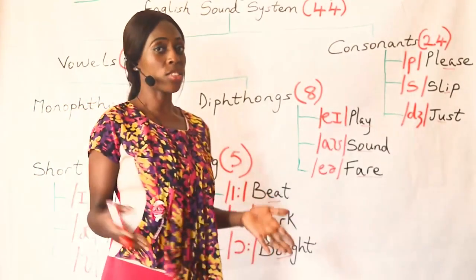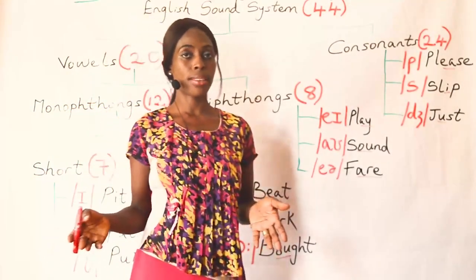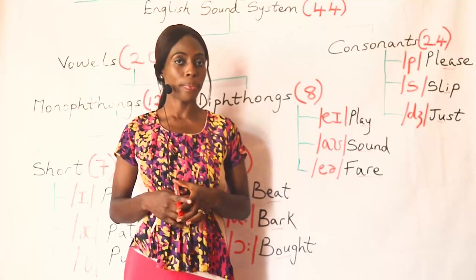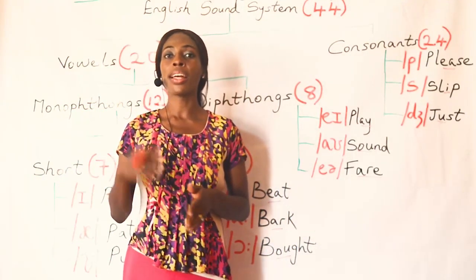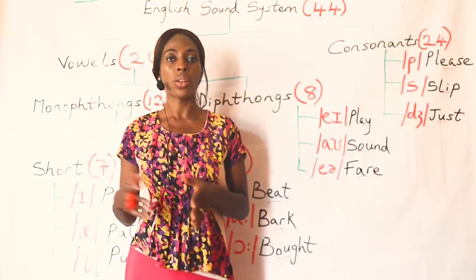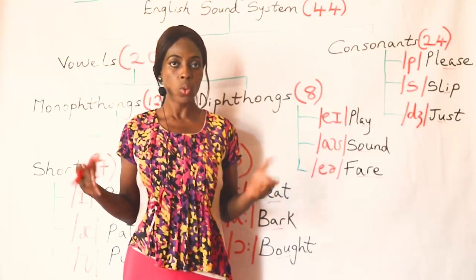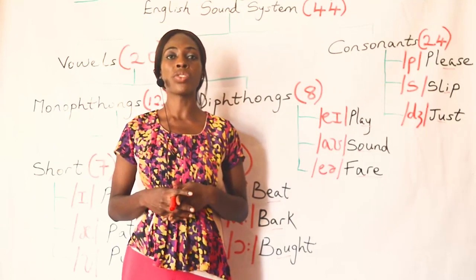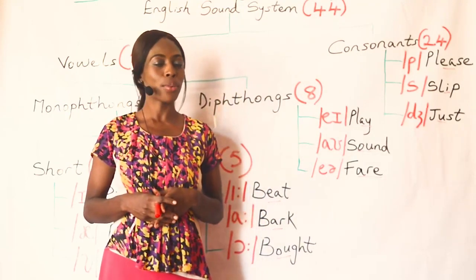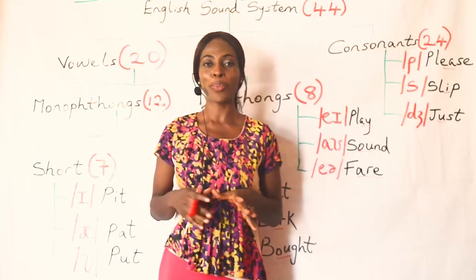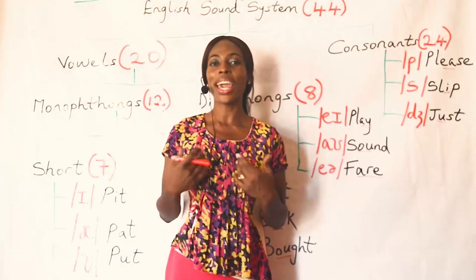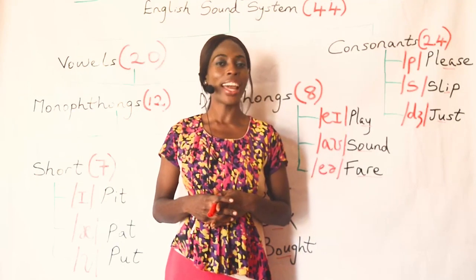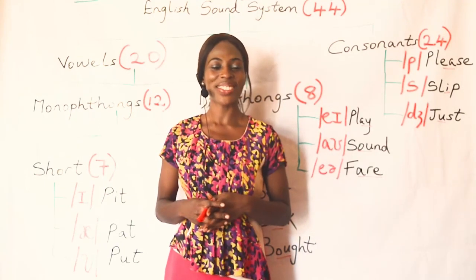There are 26 letters of the English alphabet, but there are 44 sounds in the English sound system. Today we will be looking at the 44 sounds of the English sound system — not in detail, we'll be introducing ourselves to them. When I say 44, I don't want you to be scared because these are sounds we use every day in our daily conversation. Hello and welcome back again to Exercise Academy.